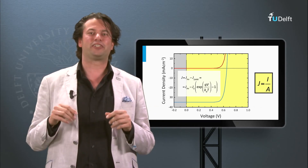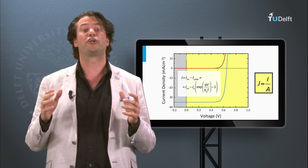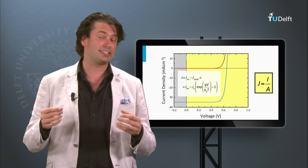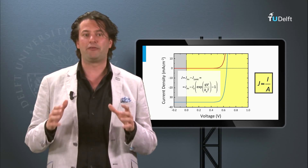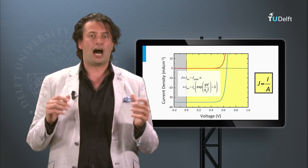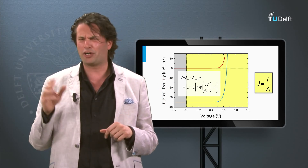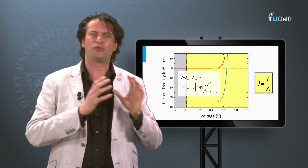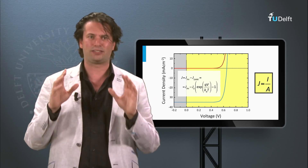In summary, I have introduced an electrical circuit and a simple expression which describes the behavior of a P-N junction solar cell under voltage biasing and illumination. This behavior can be represented in a so-called JV curve. How does this JV curve relate to the performance of a solar cell — in other words, the conversion efficiency of light energy into electrical power? I will answer this question in the next block.